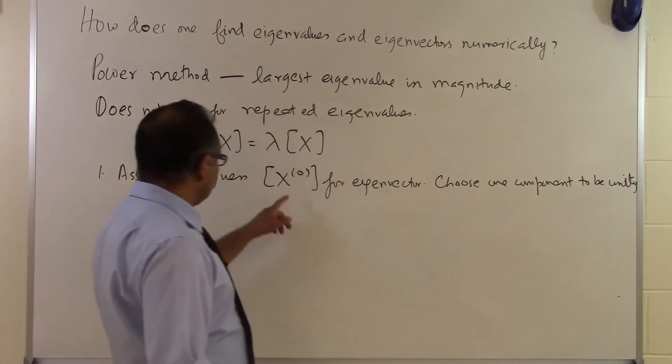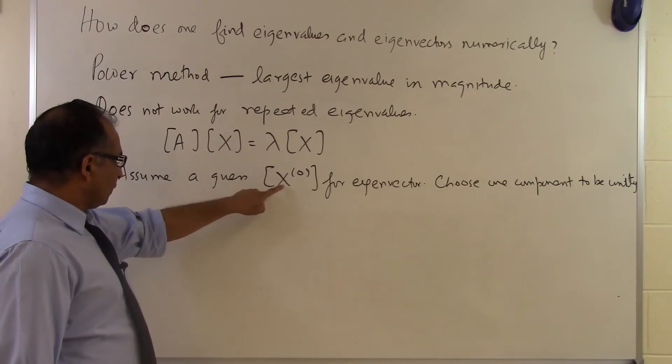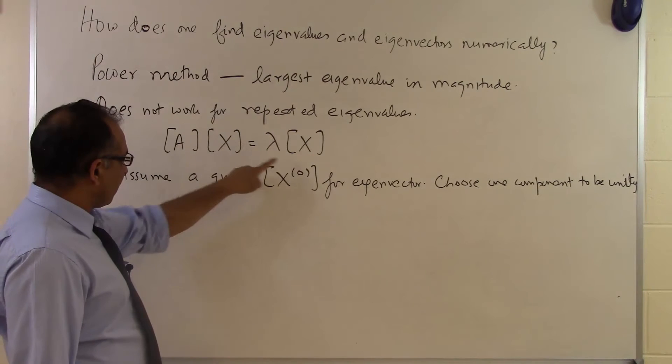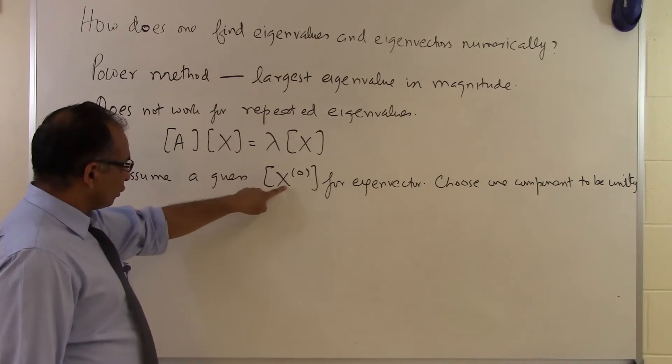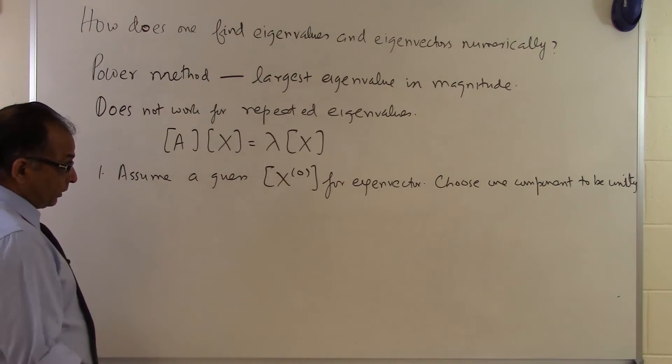What that means is that out of the guess you've chosen—of course it has to be a non-zero vector because that's how the eigenvector is defined—one of the components of this vector x₀ has to be unity, has to be 1. You have to keep it to be 1 throughout the whole process.